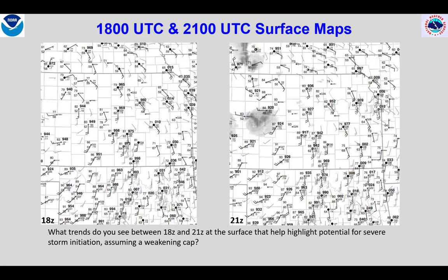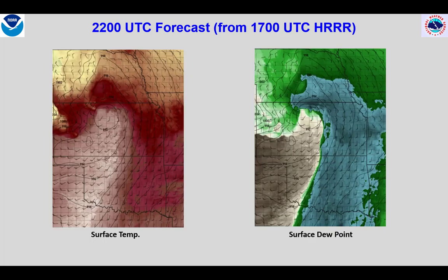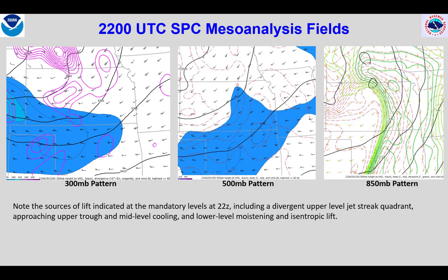The 21Z surface map shows a strengthening surface low west of Concordia, Kansas in the north central part of the state, a dry line boundary to the west of Wichita, Kansas, and a warm front from the surface low extending east-southeast over east-central Kansas with backing surface winds along it. Mid-60s surface dew points are spreading northward across eastern Kansas. With full heating, we're creating a very unstable environment across east-central and the eastern part of north-central Kansas with boundaries supporting initiation where the cap has been erased. Some mandatory levels from the SPC mesoanalysis page at 22Z show support for increasing lift given isentropic lift at 850 millibars and lift supported by upper divergent flow in the left front quadrant of an upper jet. We also see cooling at 500 millibars supporting greater lapse rates aloft and air mass instability across east-central Kansas.